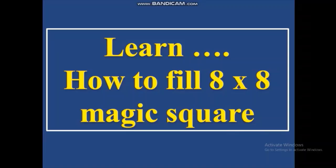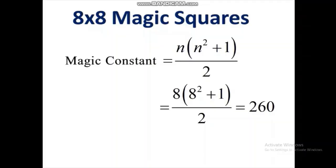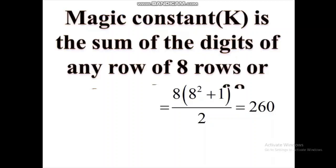Before filling an 8 by 8 magic square, we should know about the magic constant. A magic constant has its universal formula: n times n squared plus 1, divided by 2. Instead of n, we substitute 8, and we will get the result 260 because it is an 8 by 8 magic square.